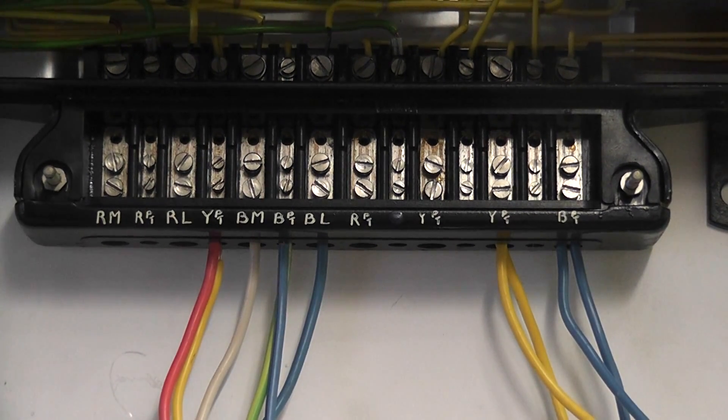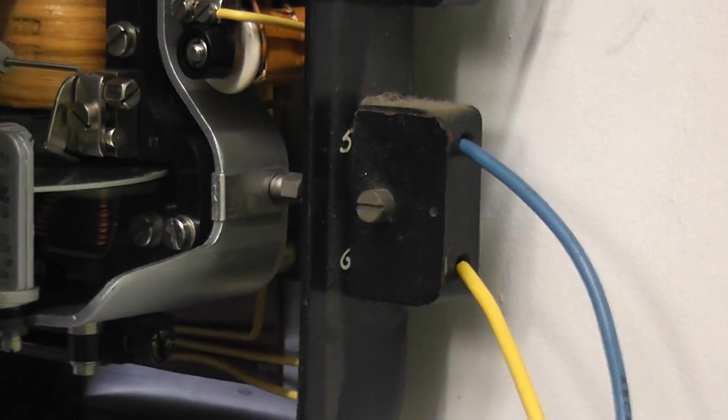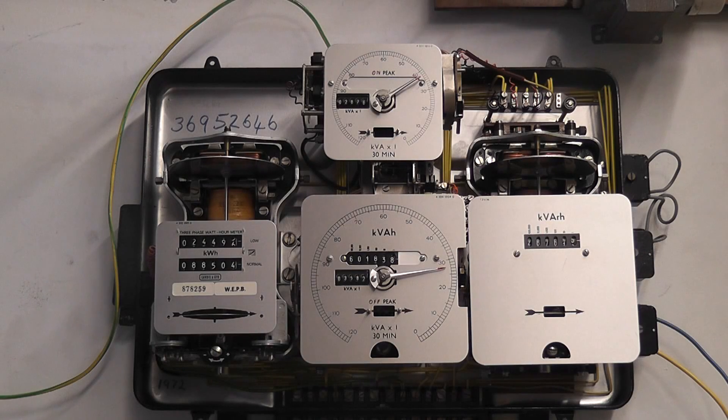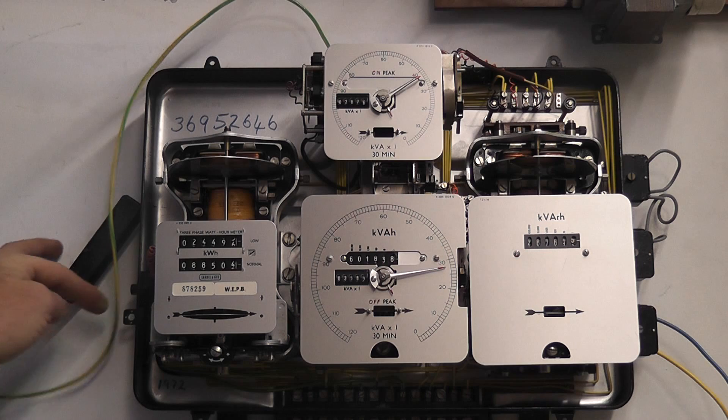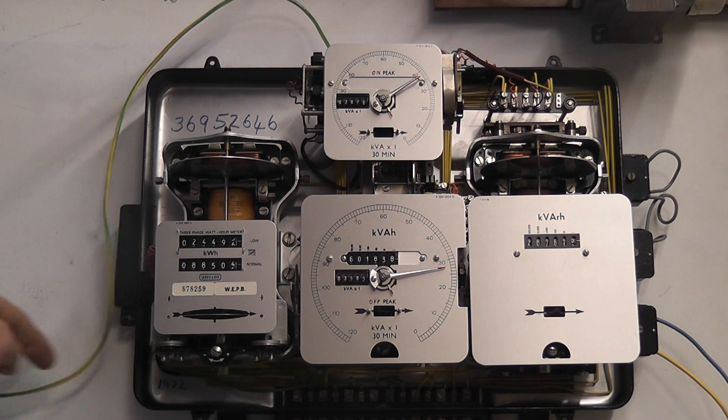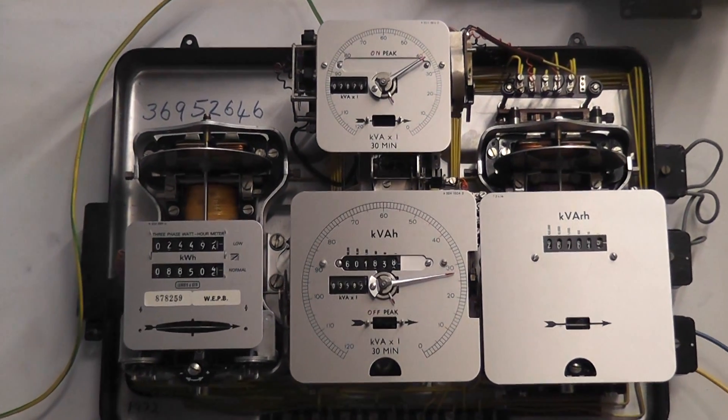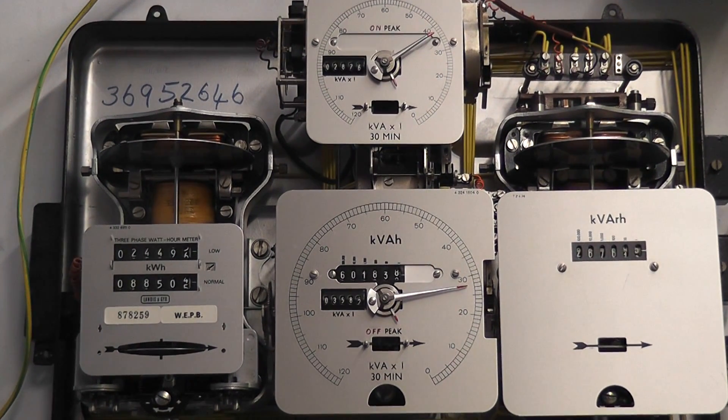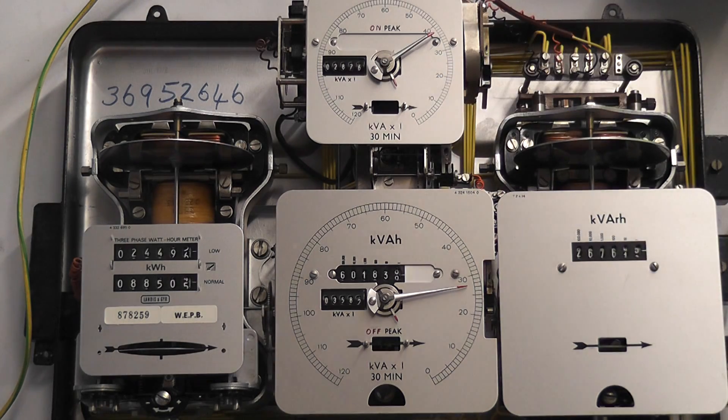And the side reservoir, which controls the MDIs. It's a little terminal block here. I will do a reset on the meter. Pushing the button on the side. The needles fall down. And the cumulative registers will add on the MDI readings from the pointers, onto the totalizing registers.